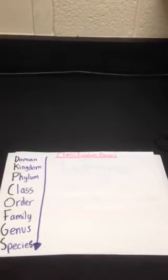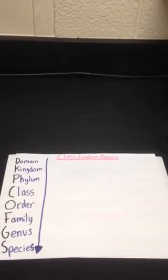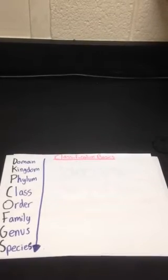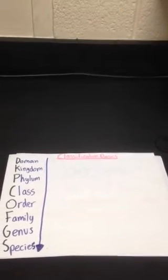If the same species is shared, then the same genus, family, order, class, phylum, kingdom, and domain is shared. If the same genus is shared, then the same family, order, class, phylum, kingdom, and domain is shared, and so on and so forth.